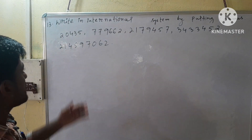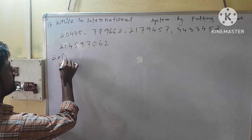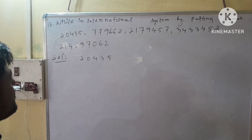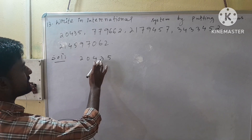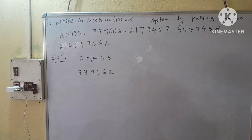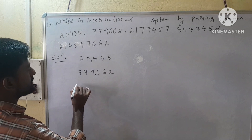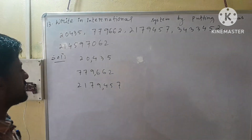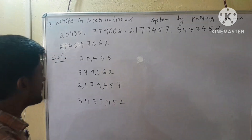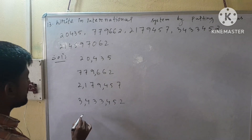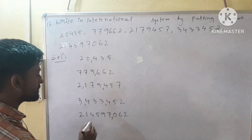Some numbers are given here and we have to write these numbers in international system by using commas. In international systems we have to put commas after 3 digits from the right side: 1 plus 10 plus 100 — therefore we put a comma here. For the next numbers we count three digits and put a comma, then count three more digits and put a comma again.